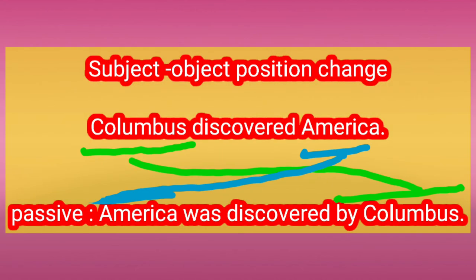Subject and object position change. 'Columbus discovered America.' Columbus, in the subject position, goes to the object position. America, in the object position, goes to the subject position. This is shown by the different colored lines.